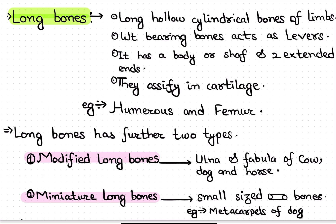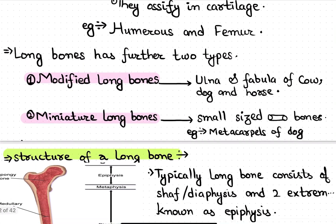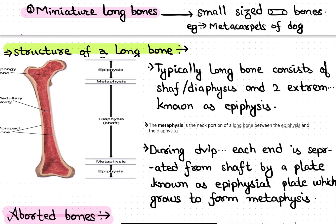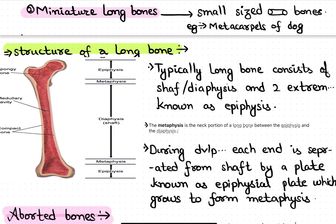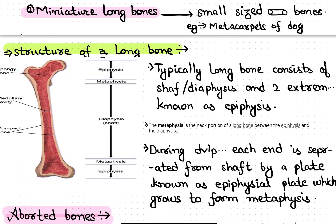Flat bones do not carry weight, but long bones like the femur do. A long bone has a body or shaft and two extended ends. The cylindrical portion is known as the diaphysis or shaft, and the two extremities are known as epiphysis. There is also an epiphysial plate which forms the metaphysis during the maturation period.